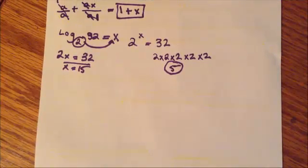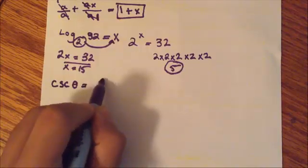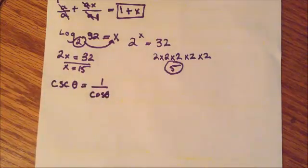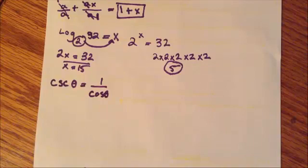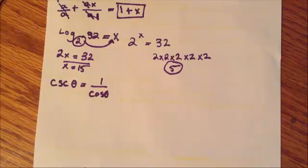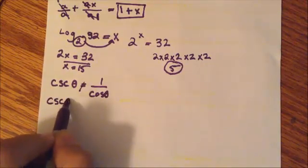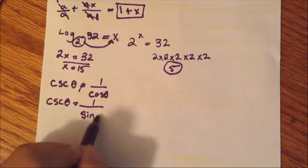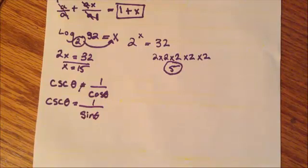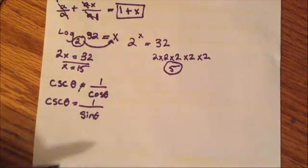The third common mistake happens when we're dealing with trigonometric identities. So let's say we have cosecant of theta equals 1 over cosine of theta. And my question would be, is this statement true? At first glance, you might say cosecant, cosine, and it sounds just about right. But in reality, you're making a mistake. Cosecant is not equal to 1 over cosine. Cosecant is equal to 1 over sine of theta. The only way to avoid making this mistake is just by remembering this identity.